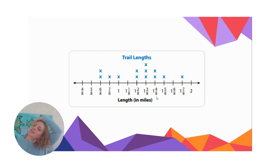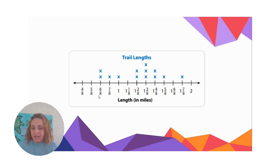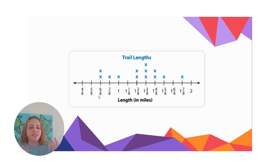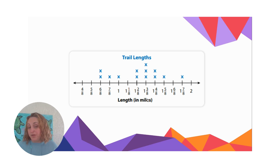So what does this tell us? It tells me that the shortest trail length is six eighths of a mile. The smallest number that has x's over top of it is six eighths, so that would be the shortest length represented. I know it's length because that's what it's labeled as — length in miles. If you're measuring something different, it will be different based on what it's labeled as. We always want to look at the labels.